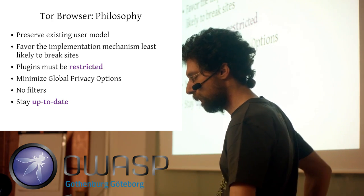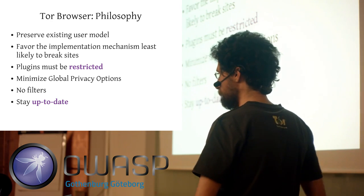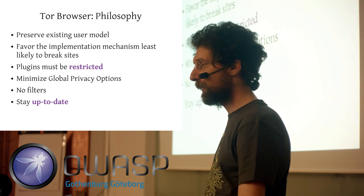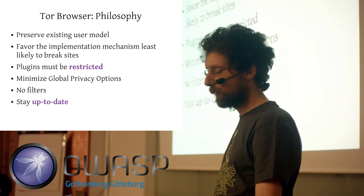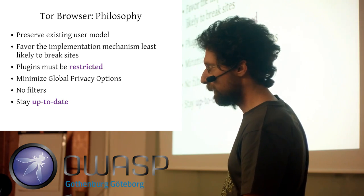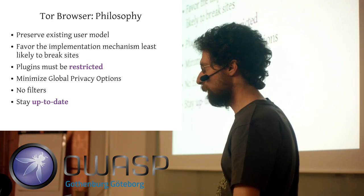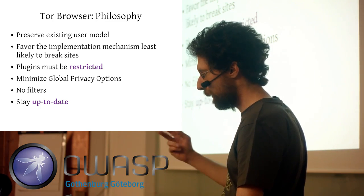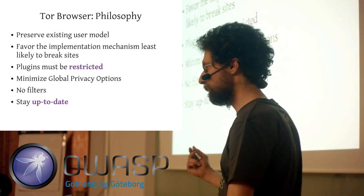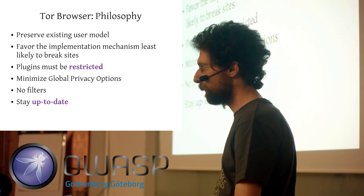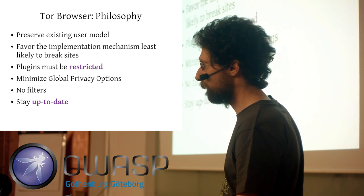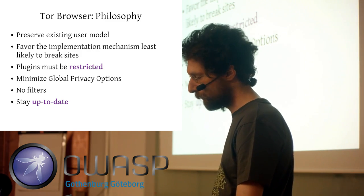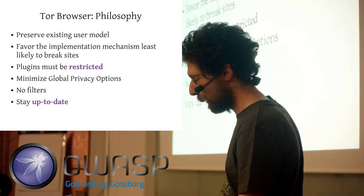Another lesson from the Tor Button era was that we need to minimize global privacy options. If you have dozens of options, it's very likely you'll click on some things, forget about them, and end up with a unique set of options checked — making it easy to single you out while browsing the web.